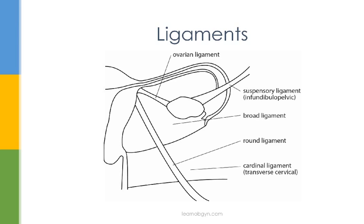The broad ligament can be divided into three sections — not very important to remember for your shelf exam, but just in case: you have the mesometrium, which covers the uterus; the meso-ovarium, which covers the neurovascular supply to the ovaries; and the mesosalpinx, which covers the fallopian tubes.